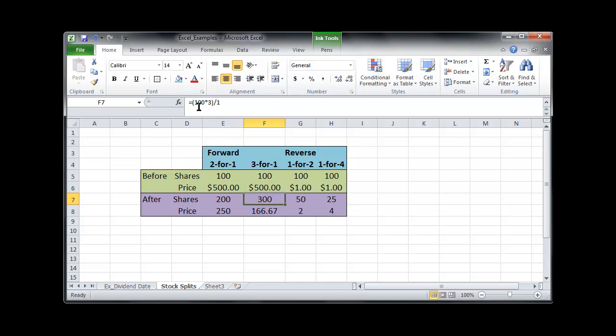We do the same thing. We take the 100, we multiply it by the three, and divide by the one. There's the three-for-one, and we get 300 shares. We find out the value of the entire lot was $500 a share times the 100 shares, divided by the new number of shares. We've reduced the price from $500 down to $166.67.